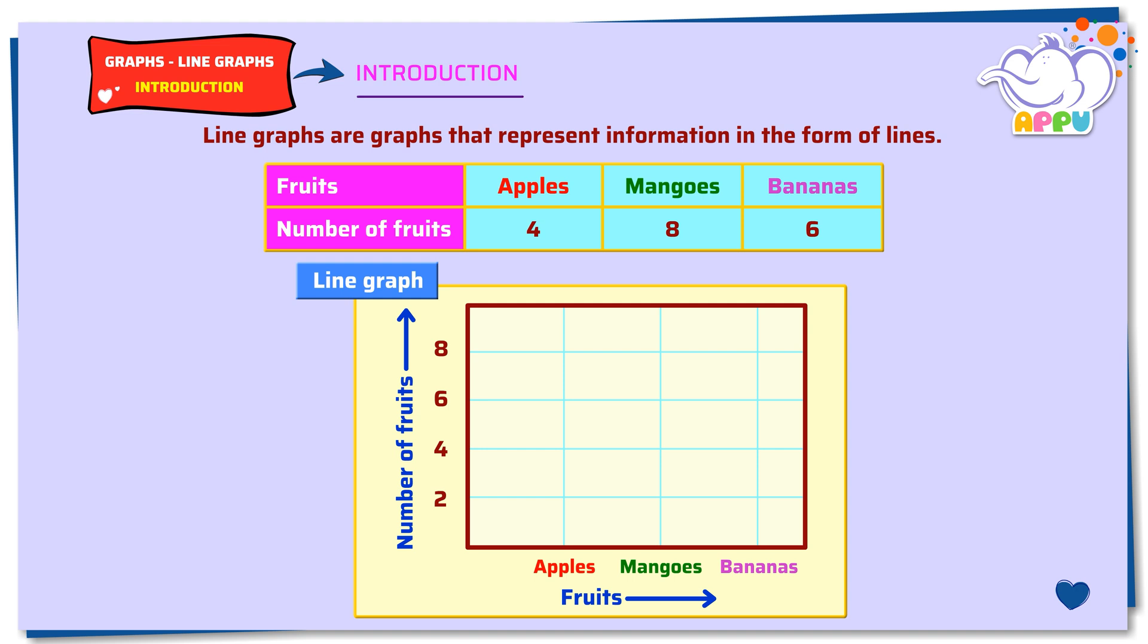In this line graph, we have the names of the fruits at the bottom. And for every fruit, we have a dot. The dot for apples is placed corresponding to four. So we have four apples.